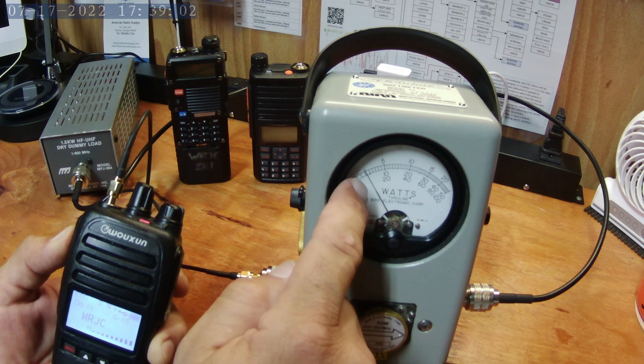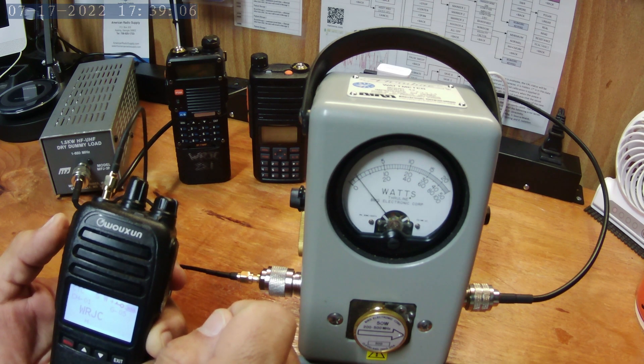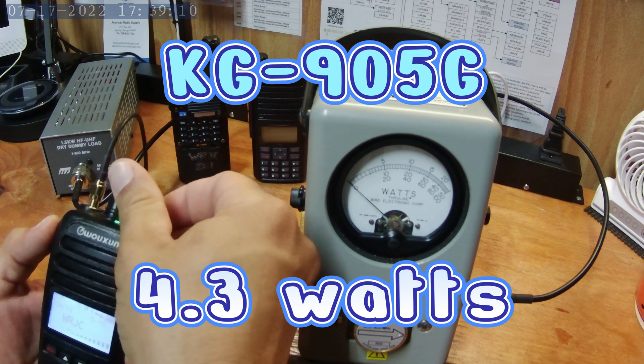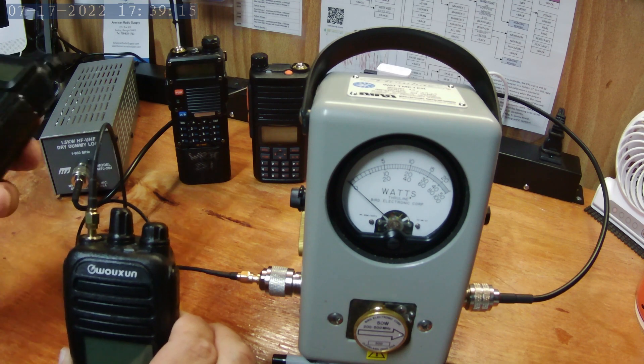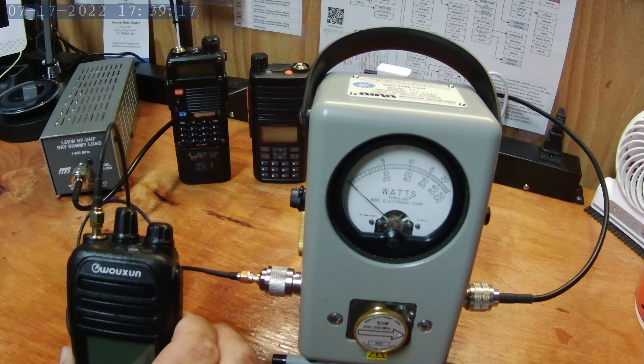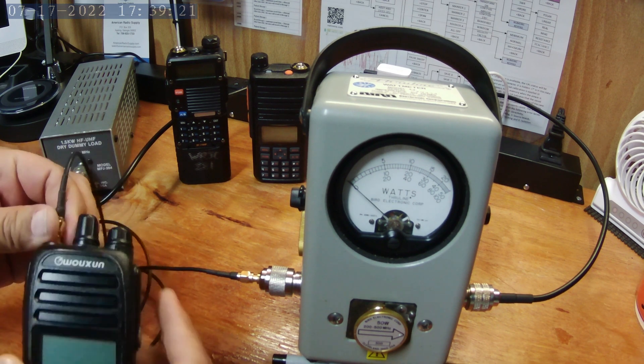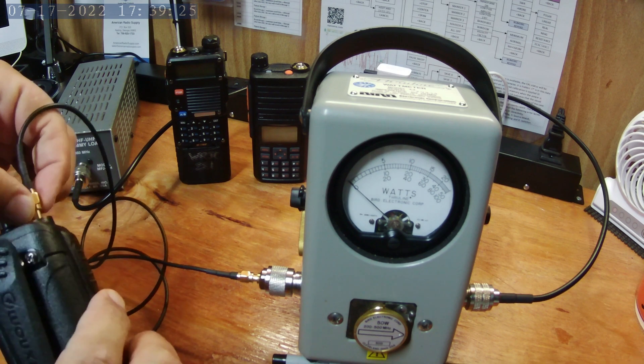So this one is about 4.3. So you're getting a little more than you would on a Baofeng if you go with the true GMRS radio.